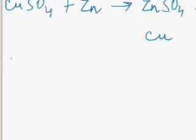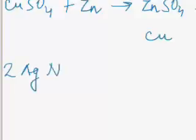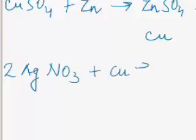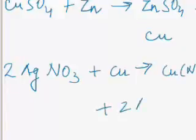Let us take another example. Copper occurs above silver in the activity series. Silver nitrate is reacting with copper and it is producing copper nitrate. Therefore silver cannot displace copper from a solution of copper sulphate.